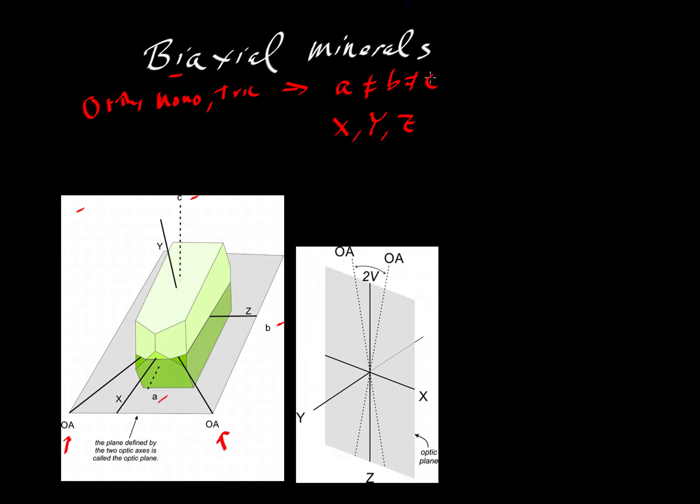Now, why do we use X, Y, and Z if we already have this notation here? Well, the reason why is X, Y, and Z might not correspond to the A, B, and C axes.